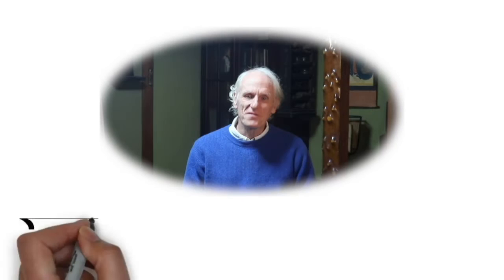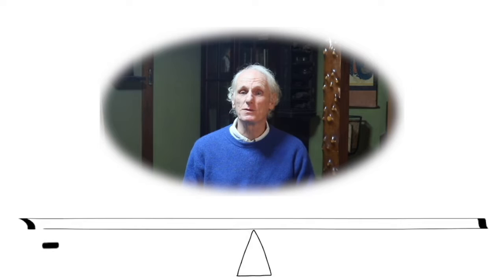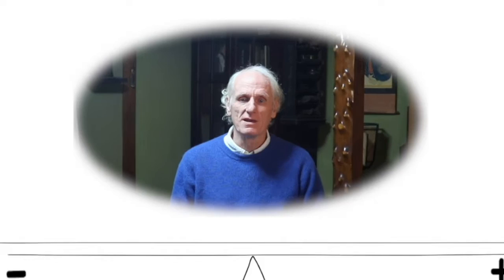It's very often helpful to look at poetry in terms of a kind of balance of opposites between the negative elements of the poem and the positive ones. So I'd like to look at Keats's Ode to a Nightingale from that point of view. Let's start by taking a close look at the first stanza of the poem.